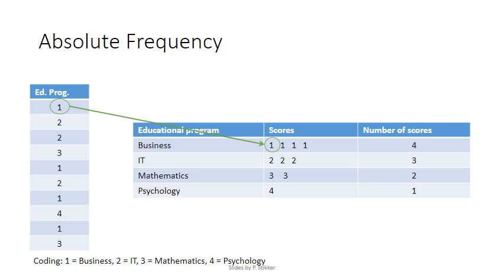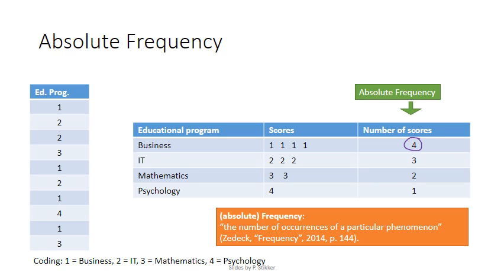So we would simply look at how many of the ones we actually have. So the first one goes there, the second one there, the third one there, and the fourth one there. And I've done the same similar for the other programs. The number of scores of one are four. So we have four students doing business. This is known as the absolute frequency.